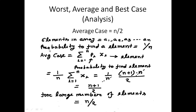Since pᵢ is constant at 1/n, we can write: (1/n) · Σᵢ₌₁ⁿ xᵢ. The summation Σ i from 1 to n of xᵢ equals n(n+1)/2, multiplied by 1/n, so n cancels and we get (n+1)/2. For a large number of elements, n+1 ≈ n, so the average case is approximately n/2.